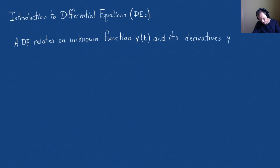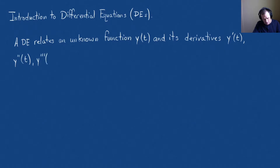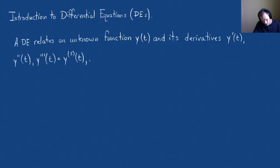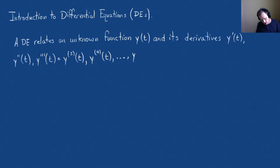Its derivatives could obviously be y prime of t — a first derivative — it could have a second derivative, y double prime of t. You could even have a third derivative. When you have higher order derivatives, like a tenth order derivative, you write it as y parenthesis three of t for the third derivative, and you could keep going up to the nth derivative, y superscript n of t.